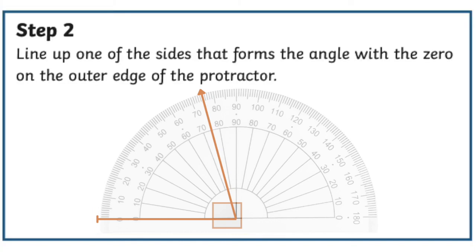Next, line up one of the sides that forms the angle with the zero on the outer edge of the protractor.